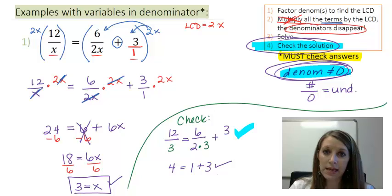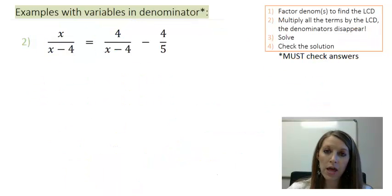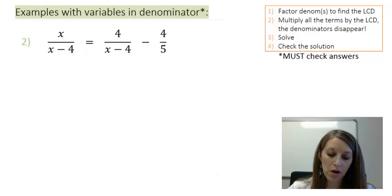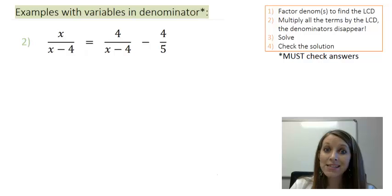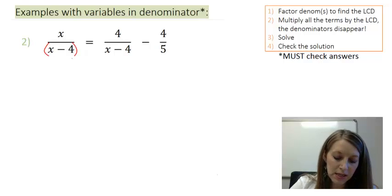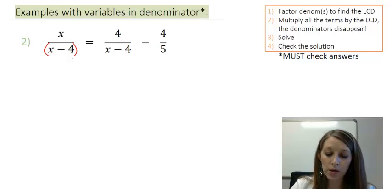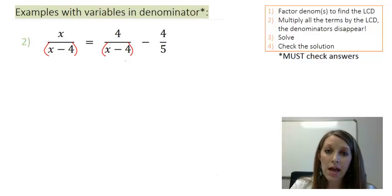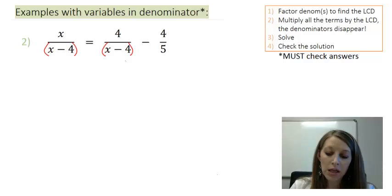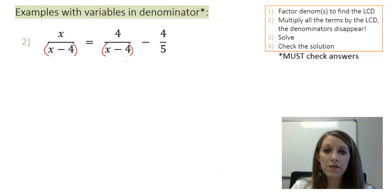So that was Example 1. Let's do the same thing with Example 2. Before I set you off to work on this, I want to point out something: if there is addition or subtraction in the denominator, that's like glue that sticks those pieces together. So the expression x minus 4 must be read as one unit — you cannot separate the x and the 4 individually. It might seem easier, but it will get you the wrong answer. Try to solve this on your own and pause the video.